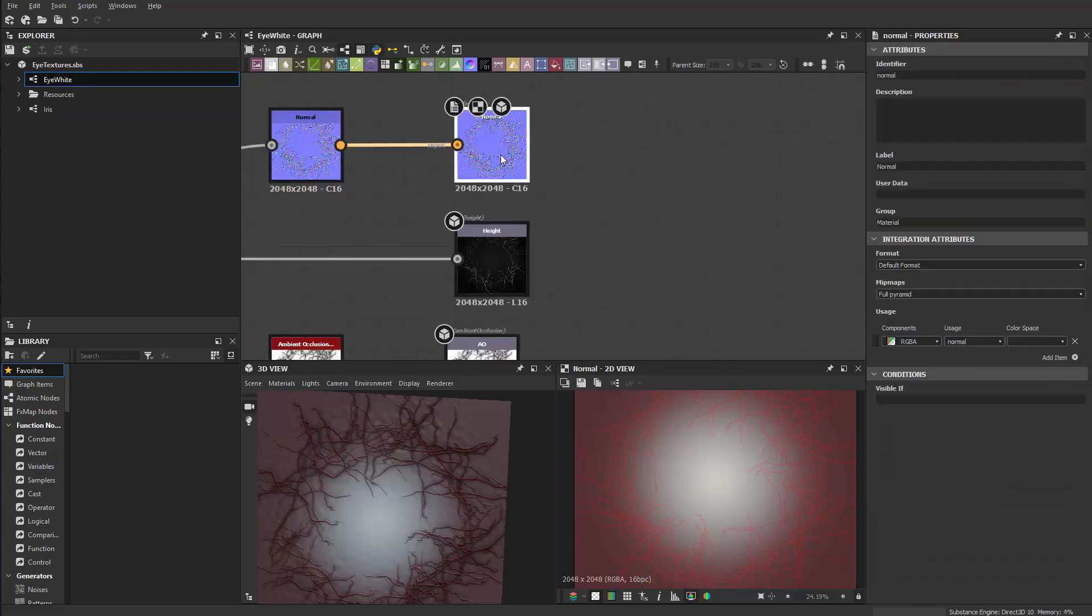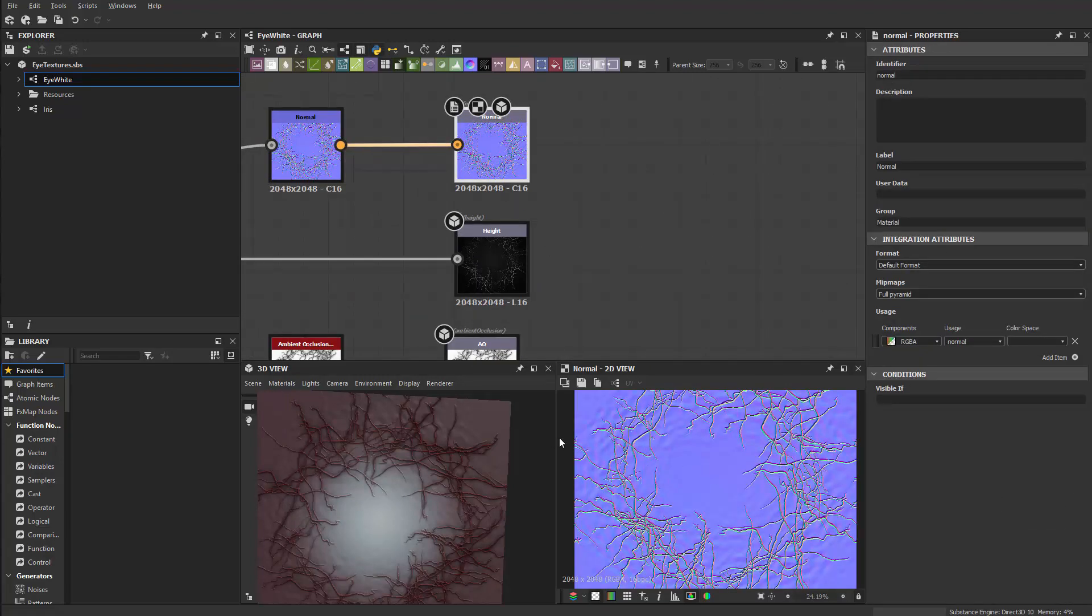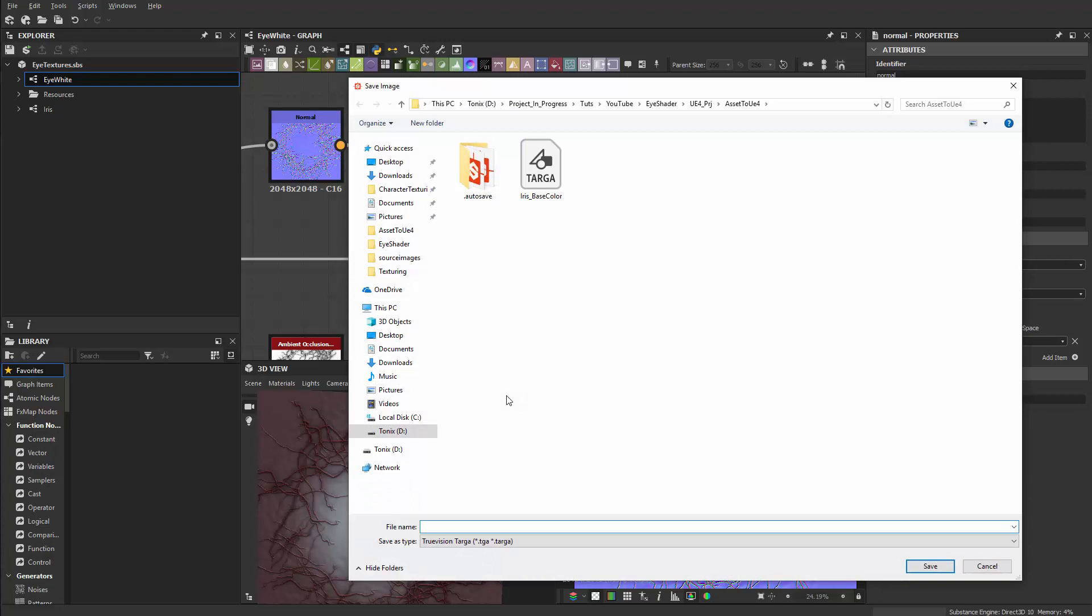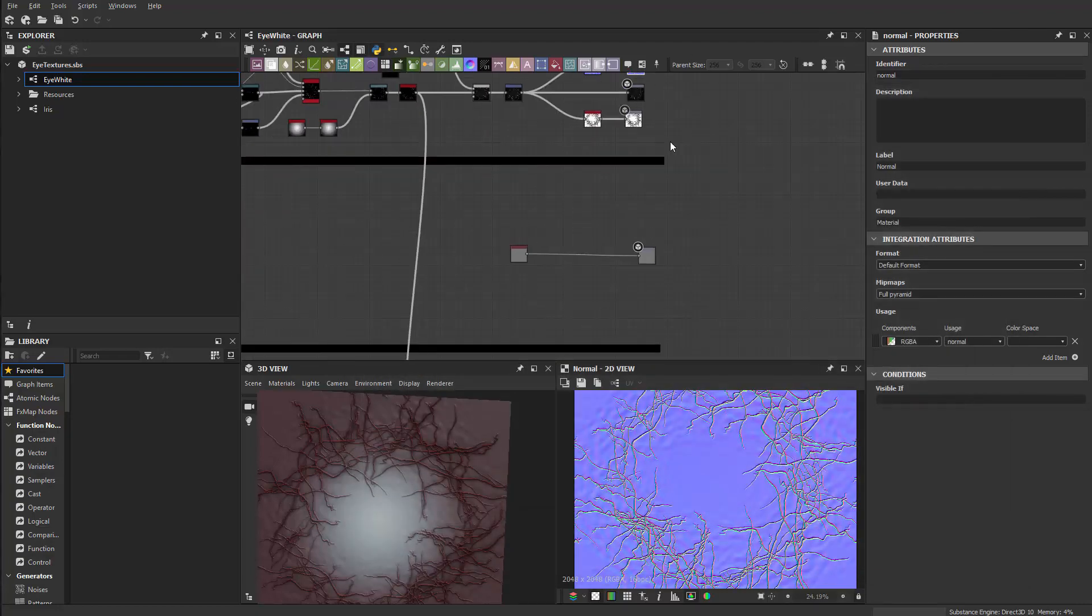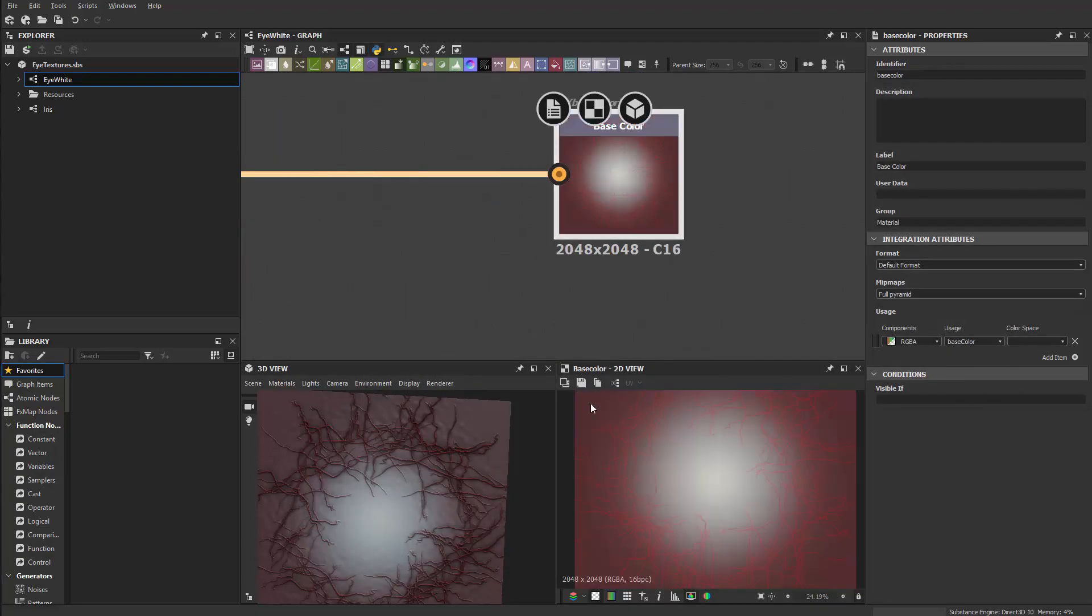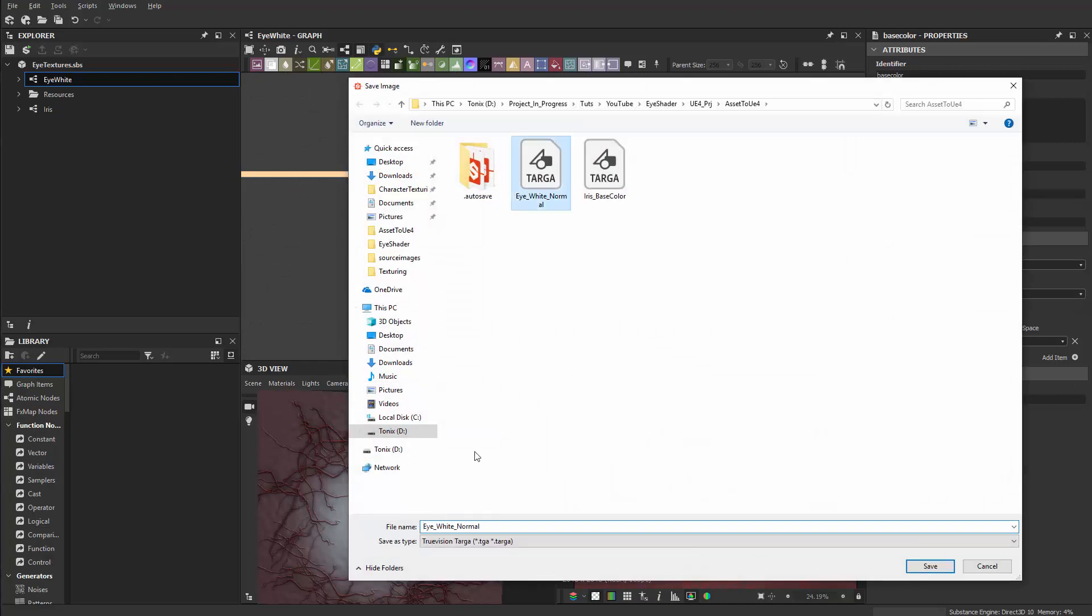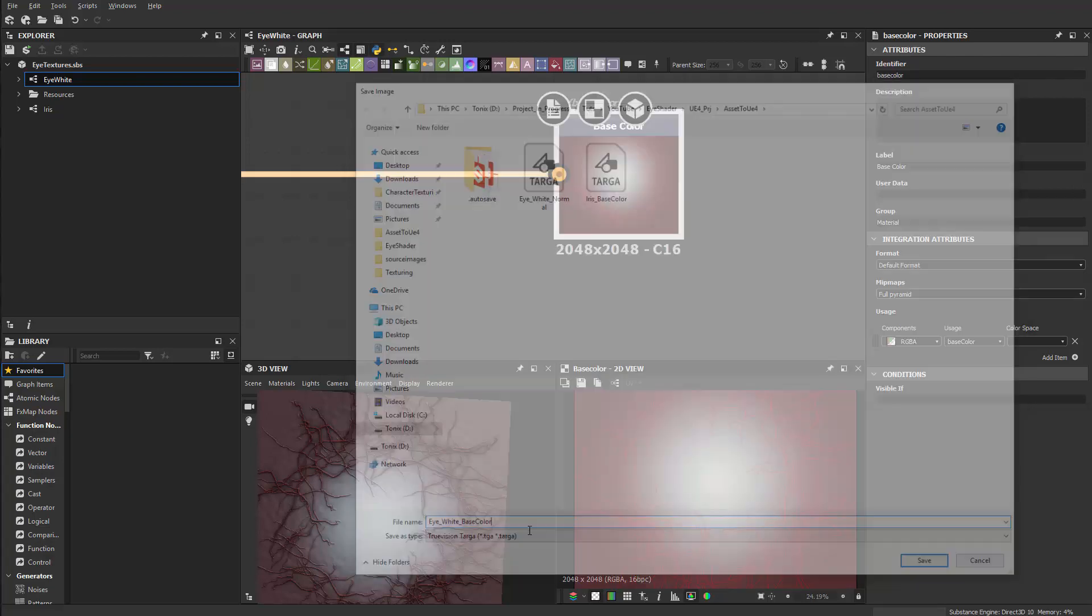So this normal will be saved. This is going to be the eye white. Then scroll down to here and that's the base color, so eye white base color.